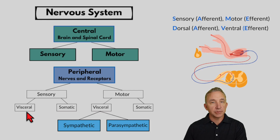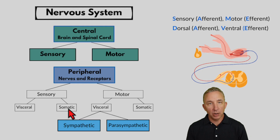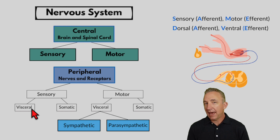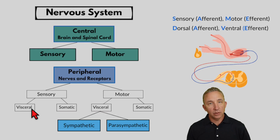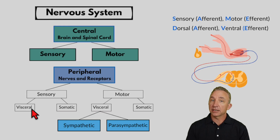We can further break down the peripheral nervous system into two types: visceral and somatic — for both sensory and motor. Somatic is what we have towards the outside, things we're more consciously aware of: my joints, my skin, my bones. Visceral refers to things inside that I don't have as much conscious awareness or control of, like my digestive organs, my lungs, my cardiovascular system — things I'm less aware of both in sensing and reacting to.